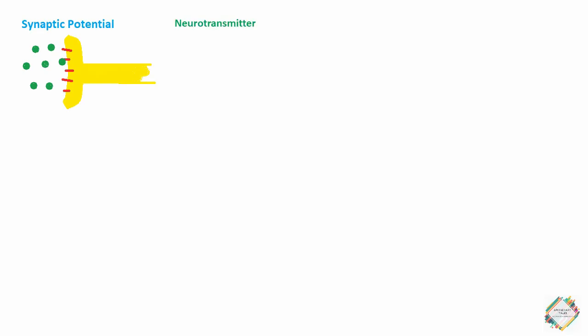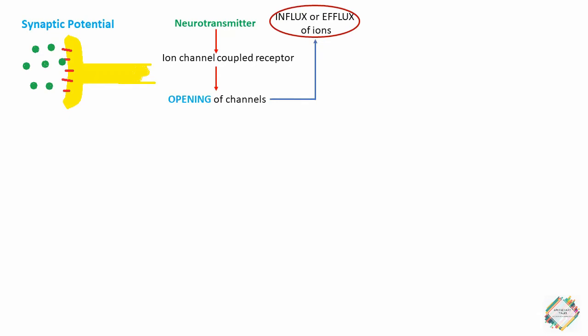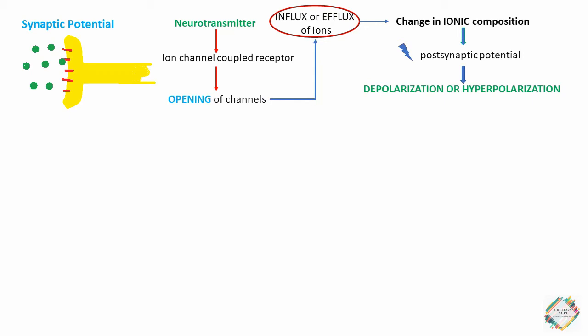Now, when we talk about synaptic potentials — in the CNS, receptors at most synapses are coupled to ion channels. When the neurotransmitter binds to the post-synaptic membrane receptors, it causes a rapid but transient opening of these ion channels. Opening the channels allows specific ions inside or outside the cell membrane to flow down their concentration gradient, from highest to lowest concentration. The resulting change in ionic composition across the membrane alters the post-synaptic potential, producing either depolarization or hyperpolarization depending on the specific ions and direction of their movement.